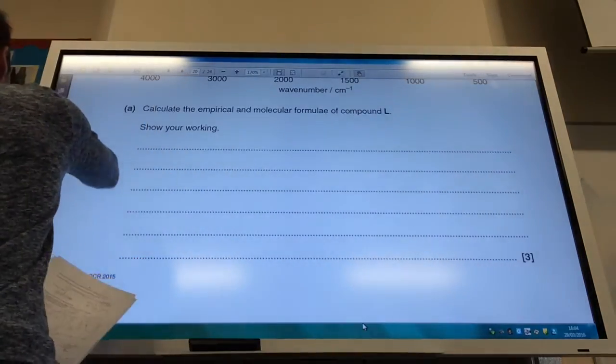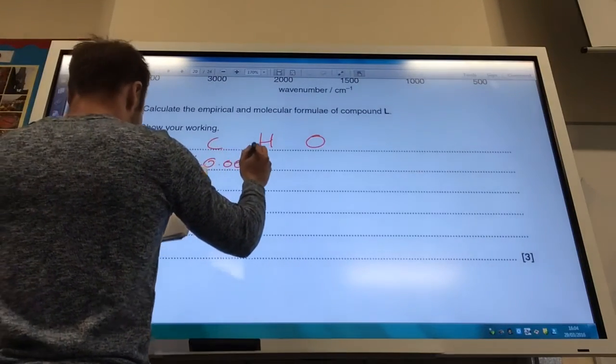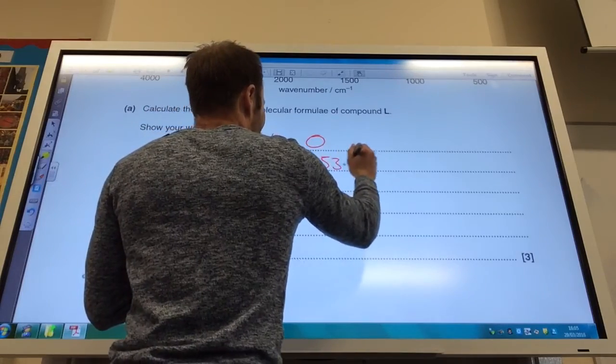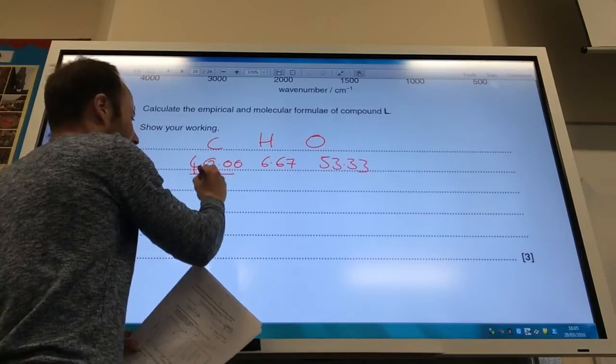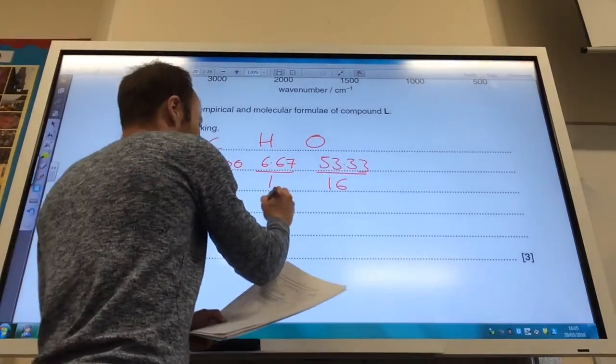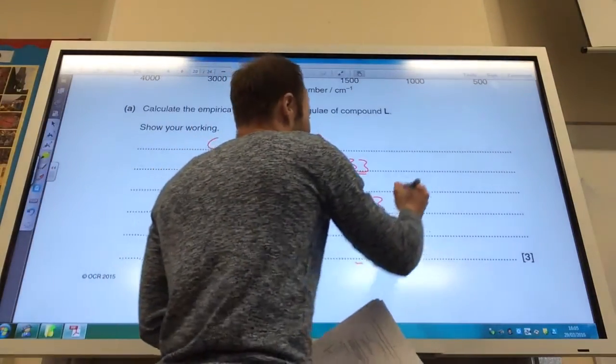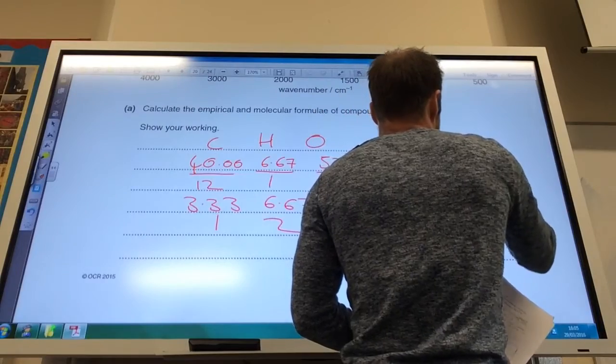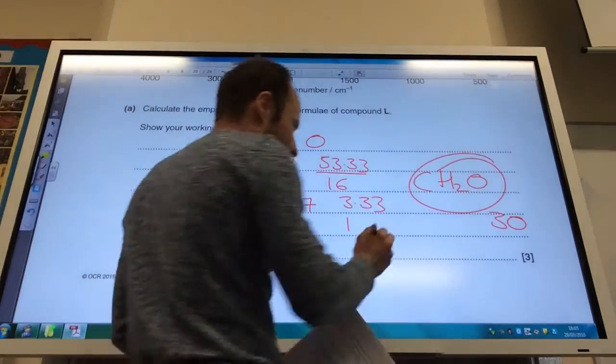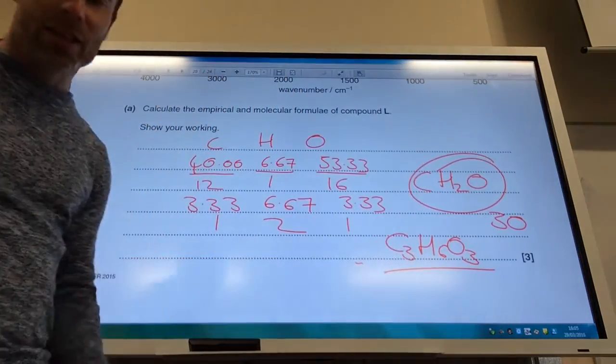First of all, calculate the empirical and molecular formula. I've got carbon, hydrogen, and oxygen. 40% of carbon, 6.67 of hydrogen, and 53.33 of oxygen. I've got to convert them into moles by dividing by the relative atomic mass. That comes to 3.33, 6.67, and 3.33. Divide by the smallest one, 1, 2, 1. So my empirical formula is CH2O. If you add all of that up together, that gives you a molar mass of 30. They've told me the molar mass is actually 90. Therefore, you times all of this by 3 to give me C3H6O3. That's my molecular formula.